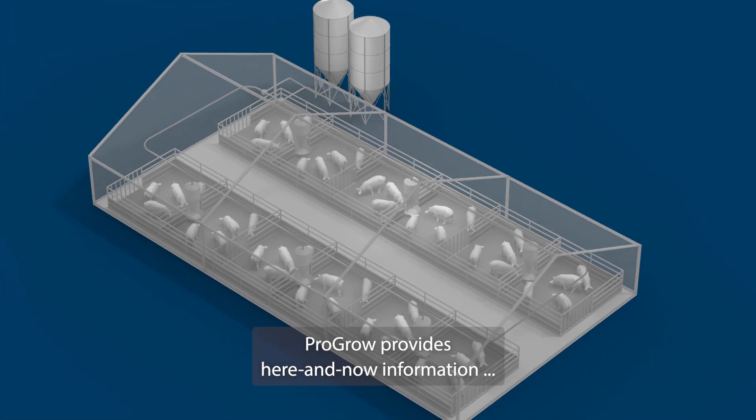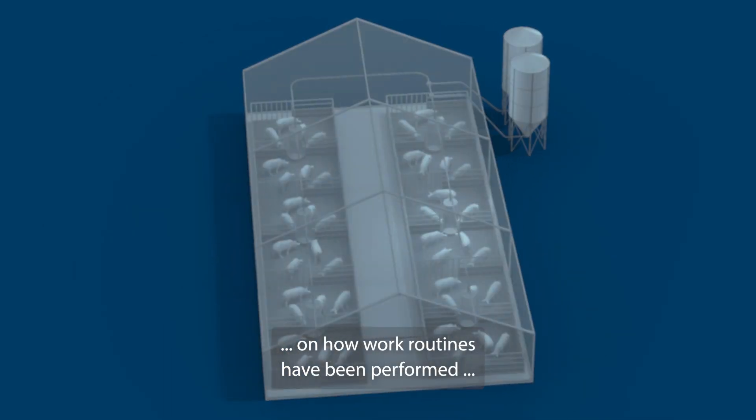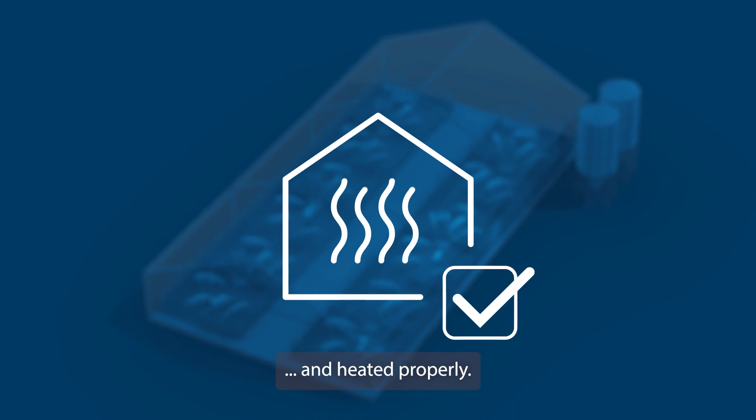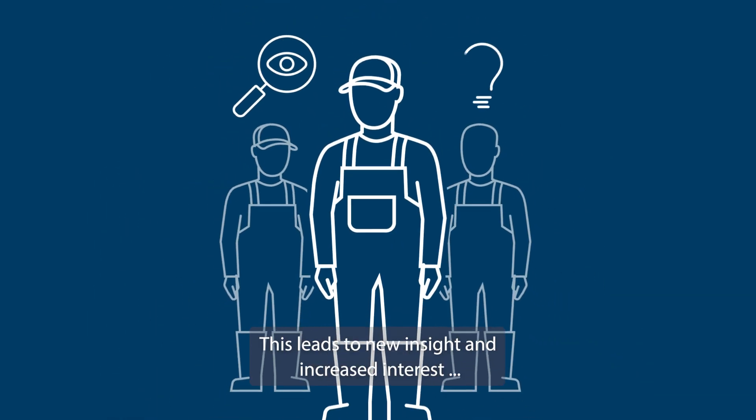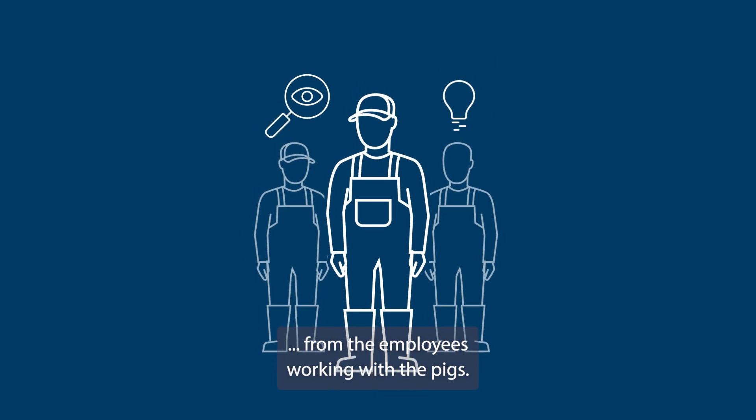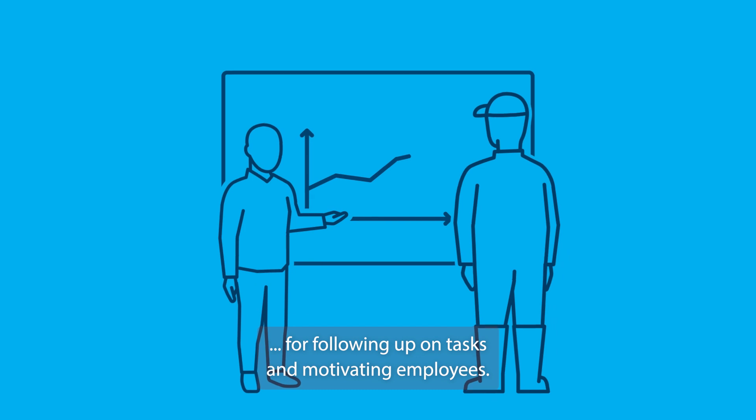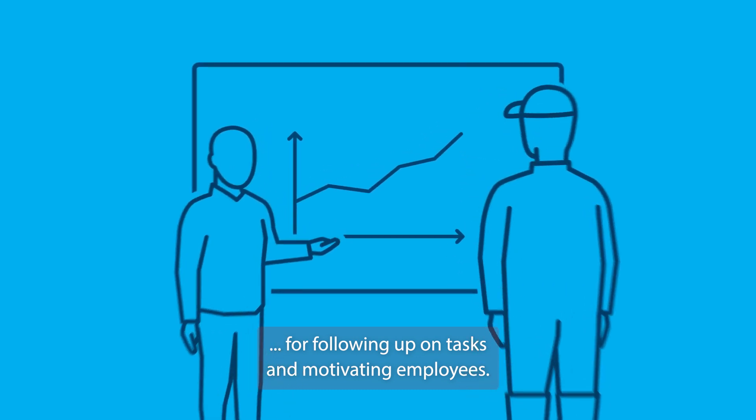ProGrow provides here and now information on how work routines have been performed, such as whether the pig house section has been dried out and heated properly. This leads to new insight and increased interest from the employees working with the pigs. ProGrow thus becomes a management tool for following up on tasks and motivating employees.